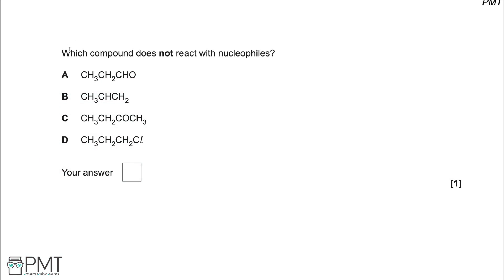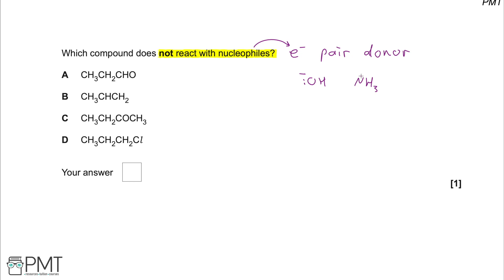This question asks us which compound does not react with nucleophiles. The first thing we need to establish is exactly what a nucleophile is, so that we can figure out what it will and won't react with. A nucleophile is an electron pair donor. Examples of nucleophiles you might have seen in class are a hydroxide anion or ammonia, where they can both donate their lone pairs to centres of electron deficiency.